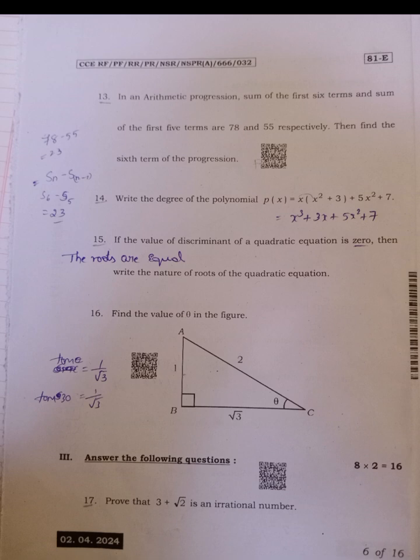Fourteenth, write the degree of the polynomial P of x equals x into x square plus 3 plus 5x square plus 7. Here, after multiplication is done, x into x square becomes x cube. So the degree of the polynomial is x cube means 3.